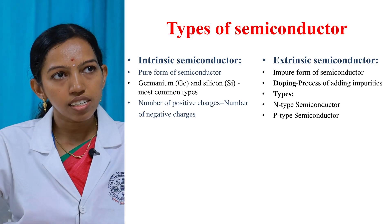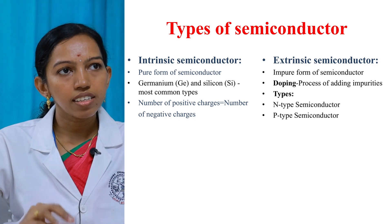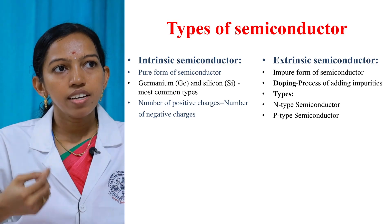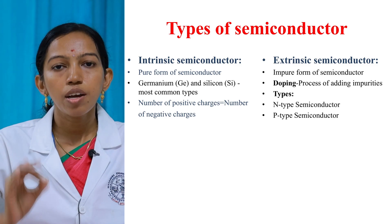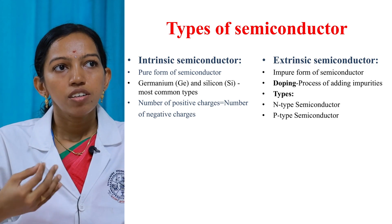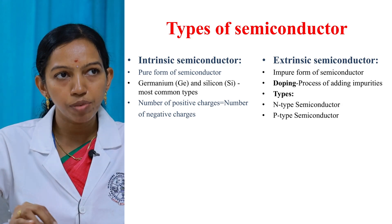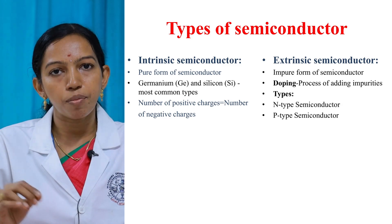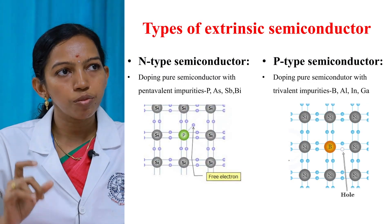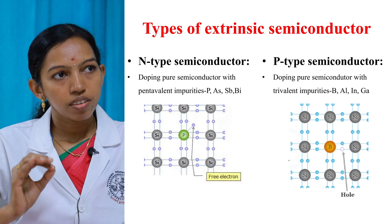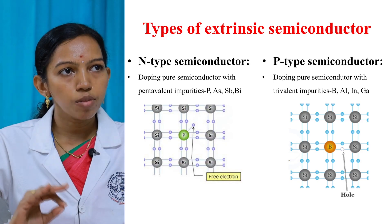The next type is extrinsic semiconductor, which is an impure form of semiconductor. The semiconductors are made impure by the process of doping. Doping is the process of adding impurities to the pure form of semiconductor. Based on the type of impurities added, it can be classified into two types: N-type semiconductor and P-type semiconductor. N-type semiconductor is obtained by doping the pure semiconductor with pentavalent impurities such as phosphorus, arsenic, antimony, and bismuth.